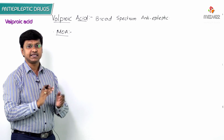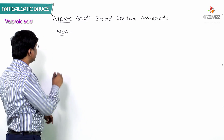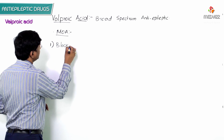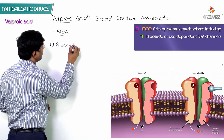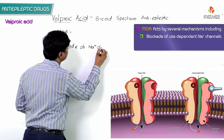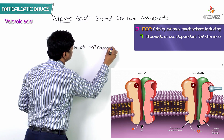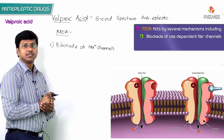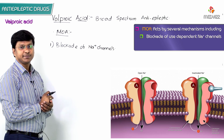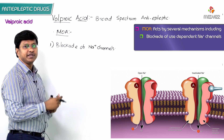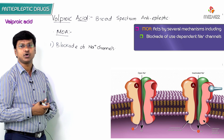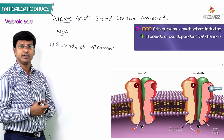Valproic acid has several mechanisms. Number one, it causes blockade of the sodium channels — use-dependent sodium channels — and thereby sodium entry into the cell is reduced, which reduces seizures and involuntary movements.